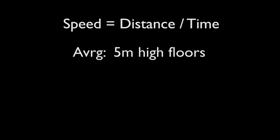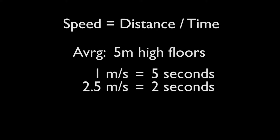The speed is the distance over time. And in this building, the average height for each floor is 5 metres. Which means, if the lift goes 1 metre a second, it takes 5 seconds to pass the floor. 2.5 metres a second lifts go 2 seconds. And 5 metres a second lifts takes 1 second to pass this.